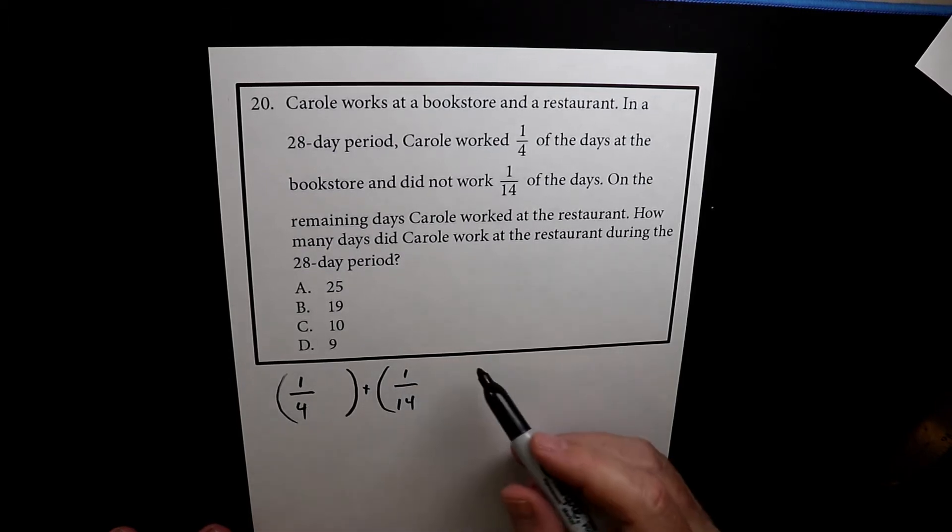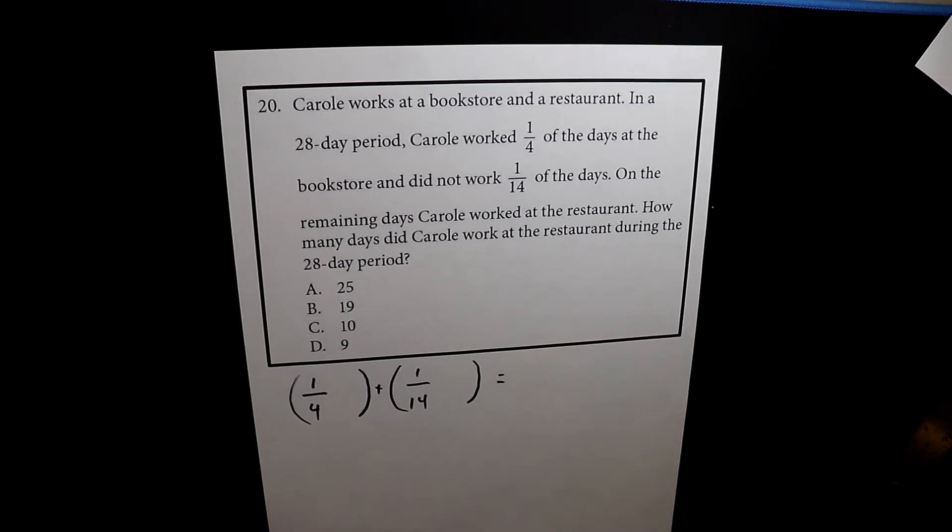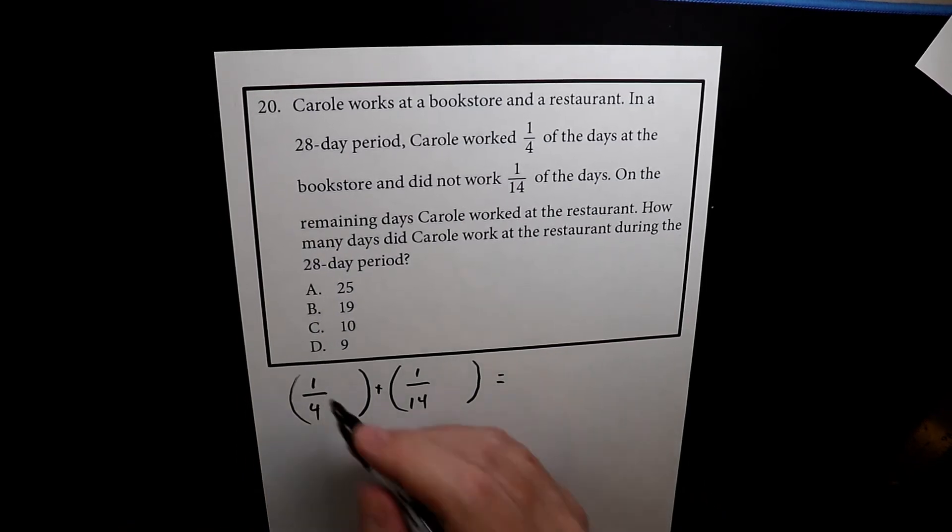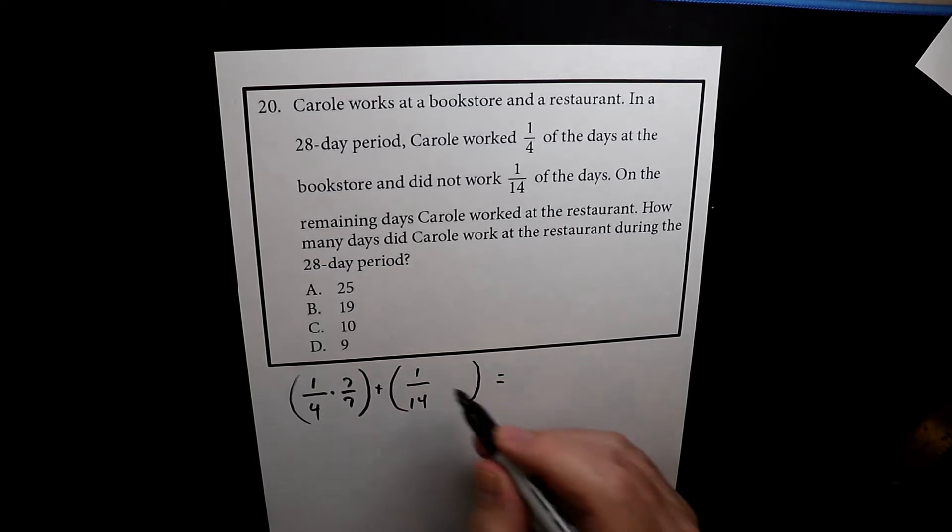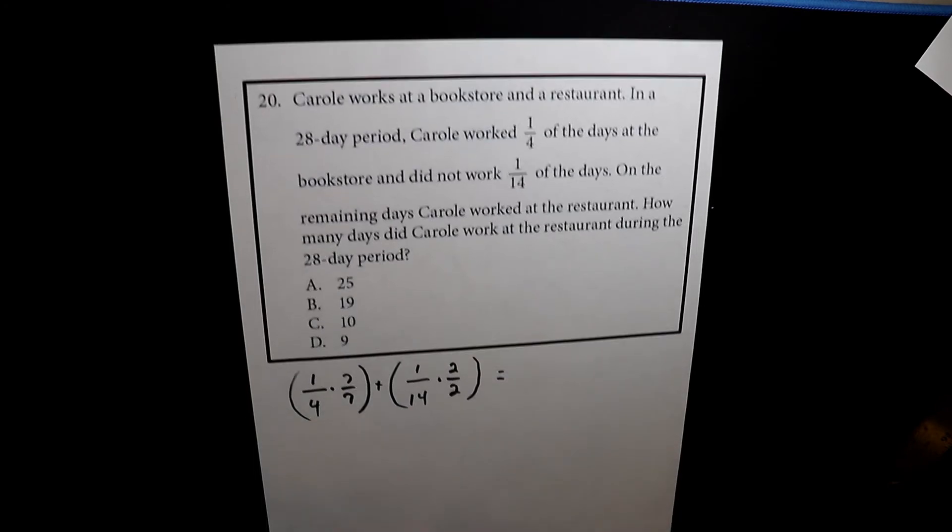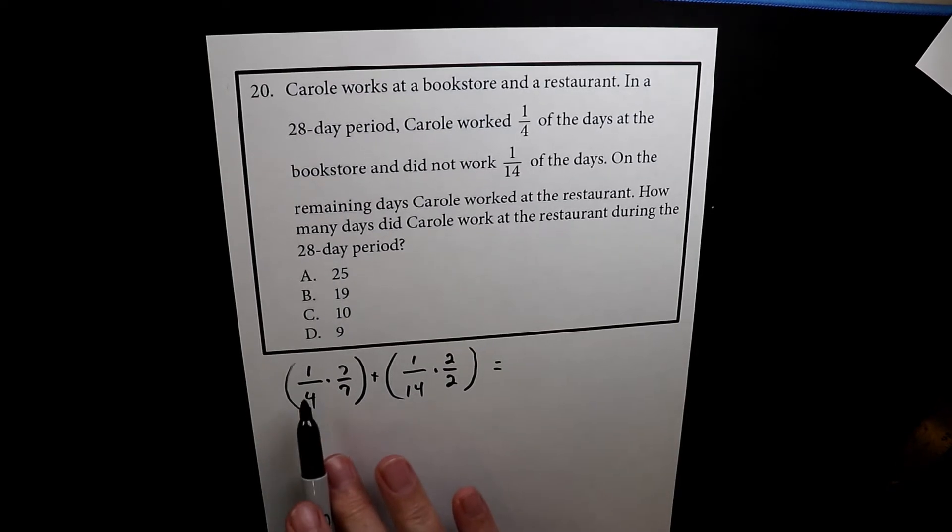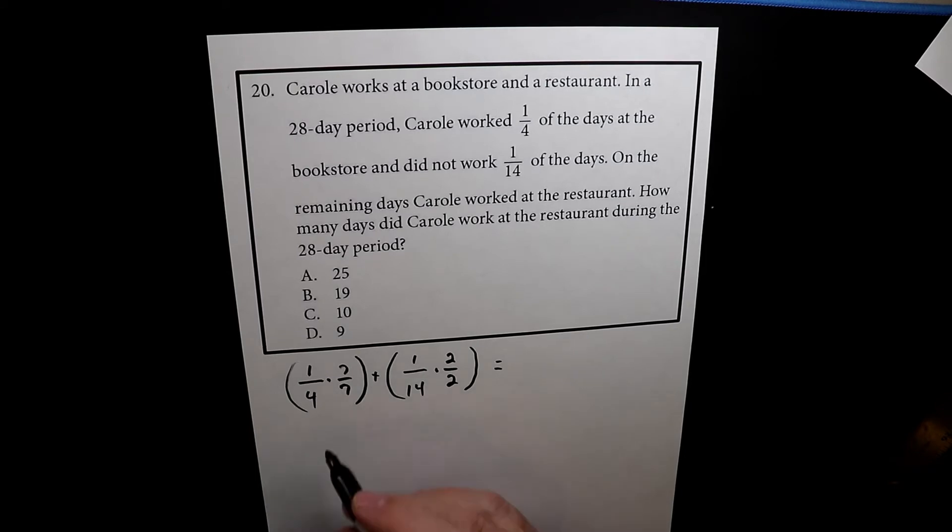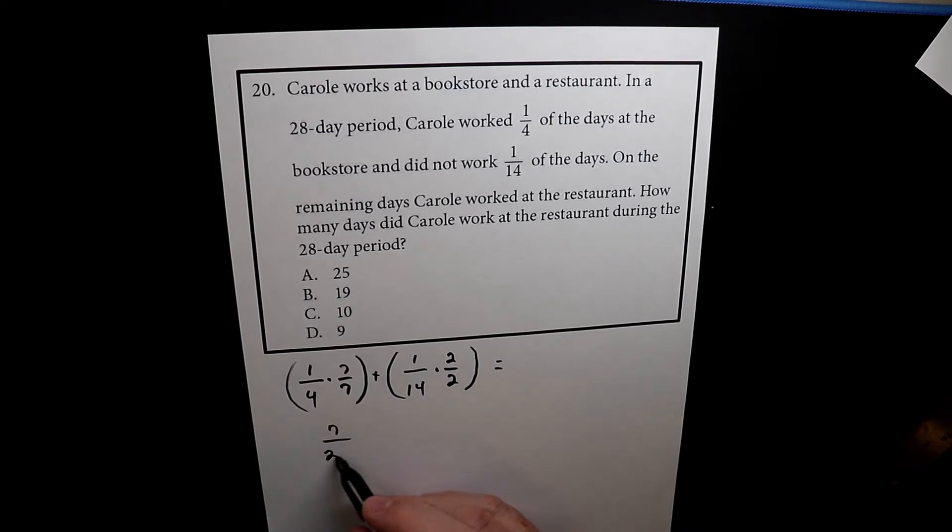I intentionally left some space there just so we had some extra space. So watch this. I'm going to multiply this by seven over seven, and this one I'm going to multiply by two over two. So what we have here is we have one times seven, which is seven, and we have four times seven, which is 28.